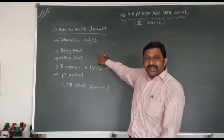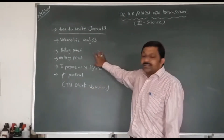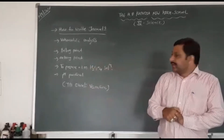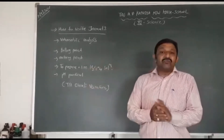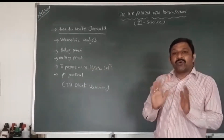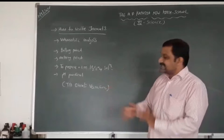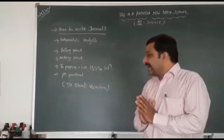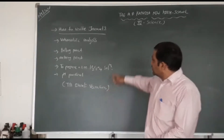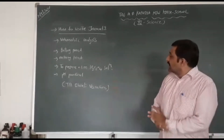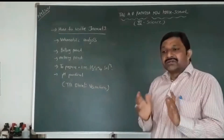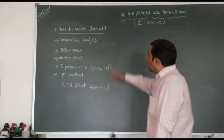The second one is boiling point, third one is melting point, and number four is to prepare 0.1 molar oxalic acid solution. Number five is the pH practical. So today we will discuss how to write your journal.